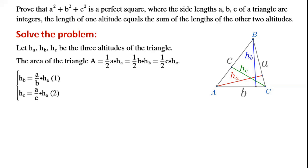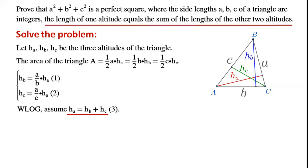We have two equations: HB equals A over B times HA, and HC equals A over C times HA. Without loss of generality, assume HA equals HB plus HC.